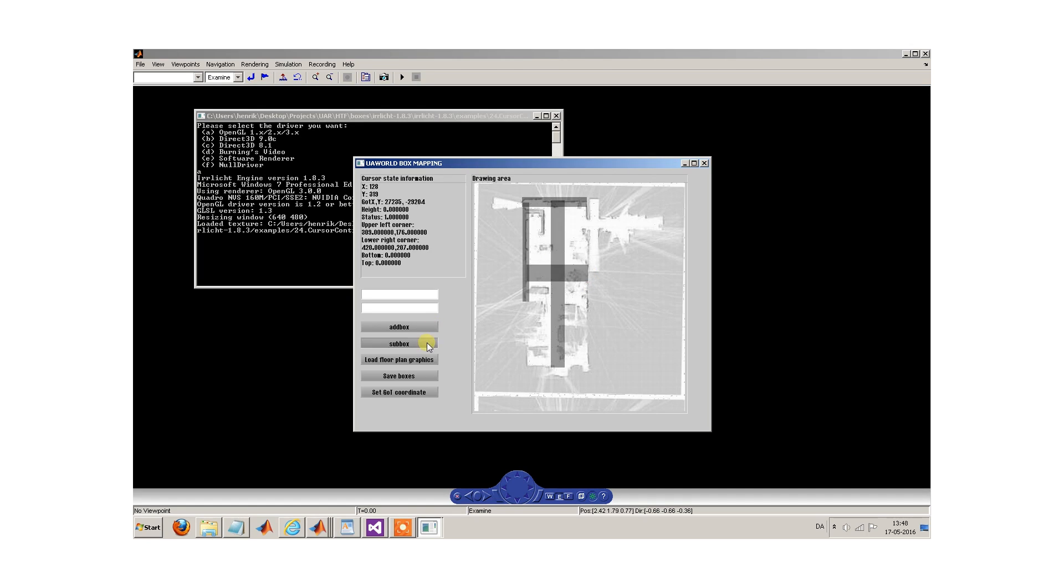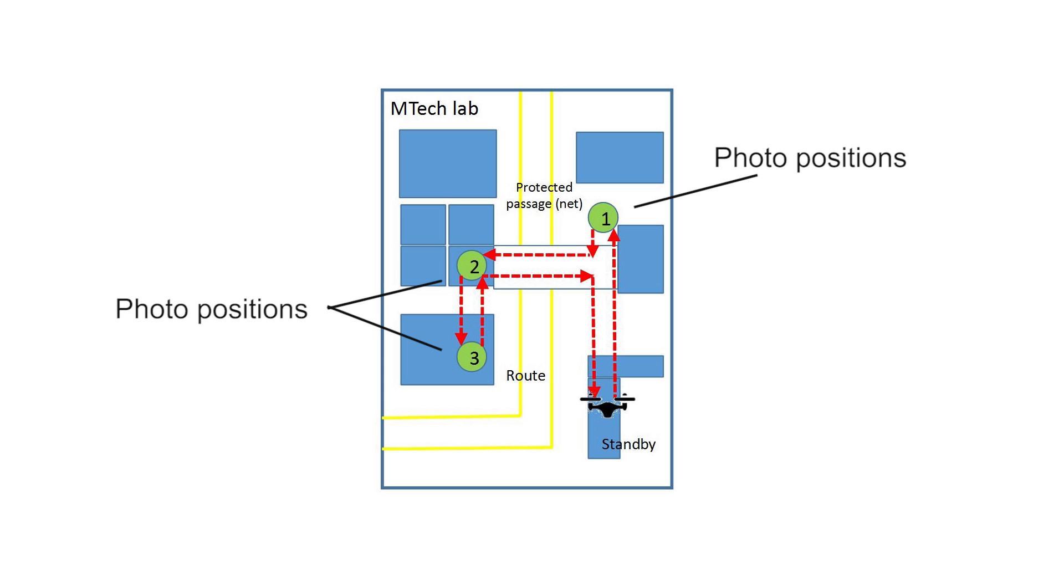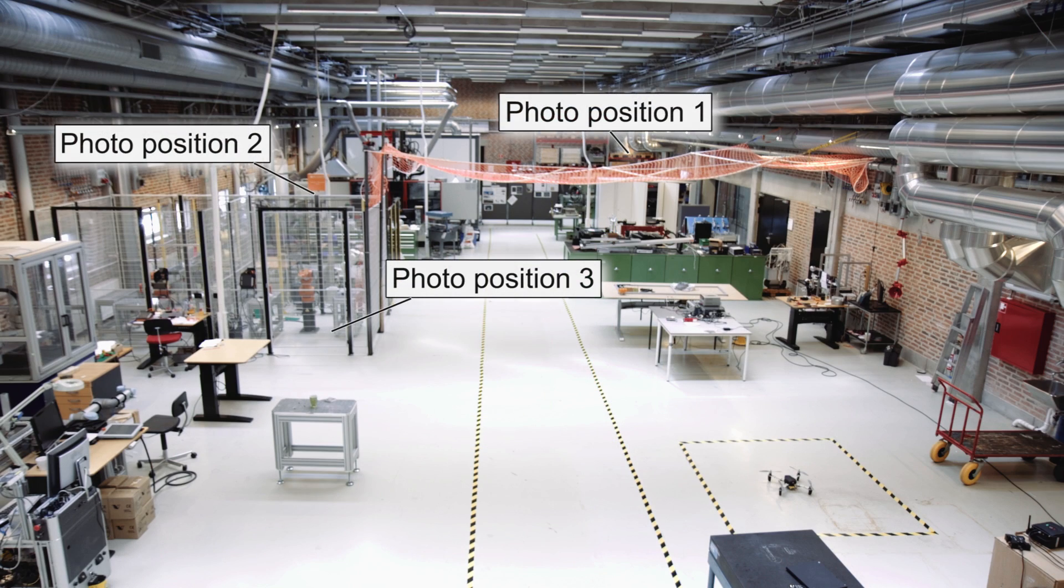We need to map the room to enable the drone to navigate without colliding with the infrastructure. The feasible waypoints for path planning are determined based on the positions of machines and other installations in the production facilities.